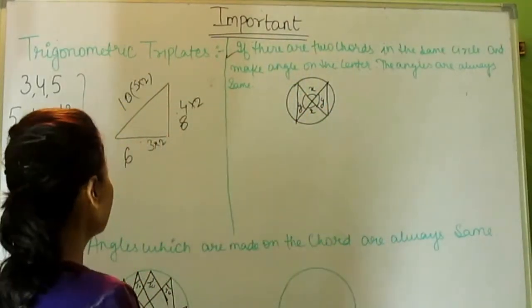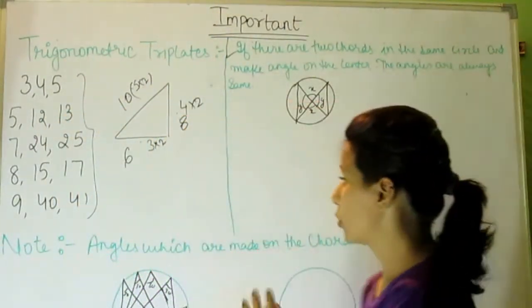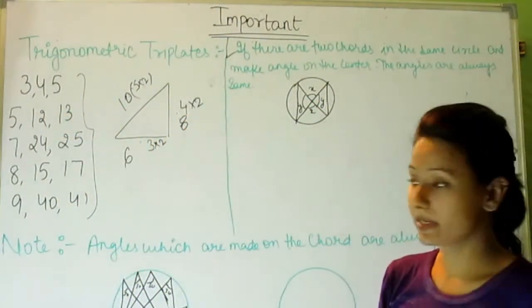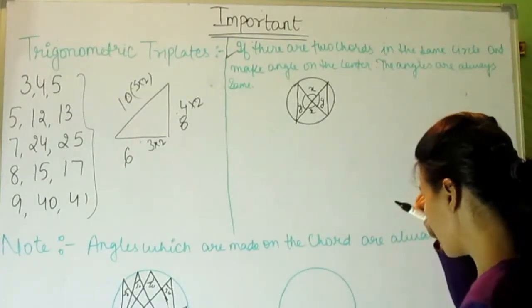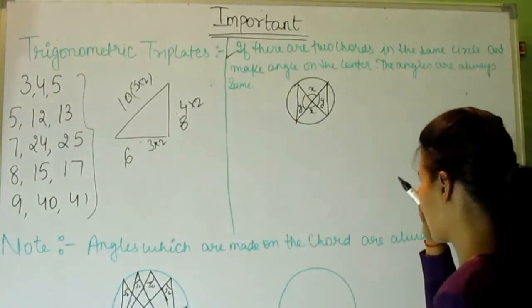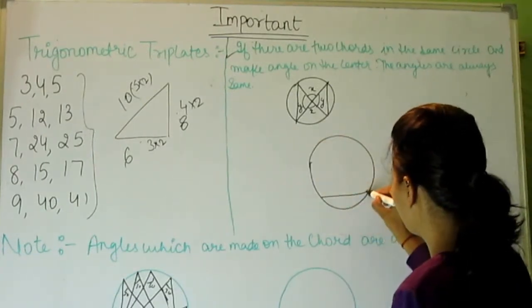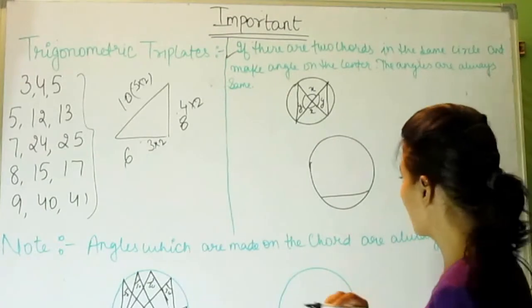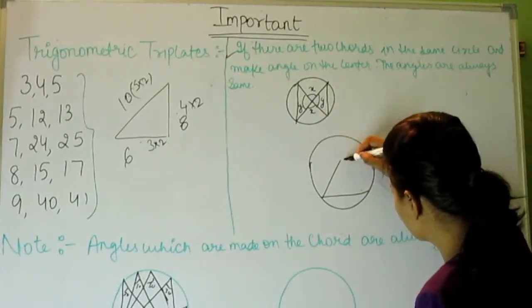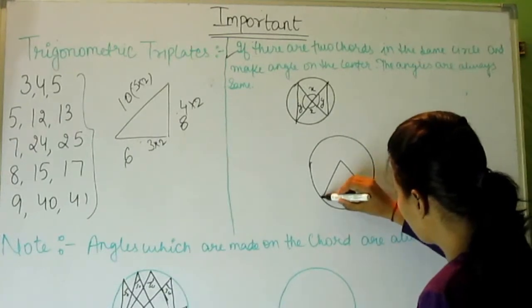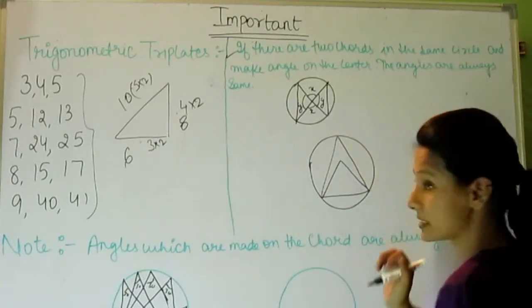So that was an important point about angles on chords. Now one more thing I would like to share with you. Let's look at this circle with a chord. This is the angle made on the chord from one point, and this is the angle made on the same chord from another point.